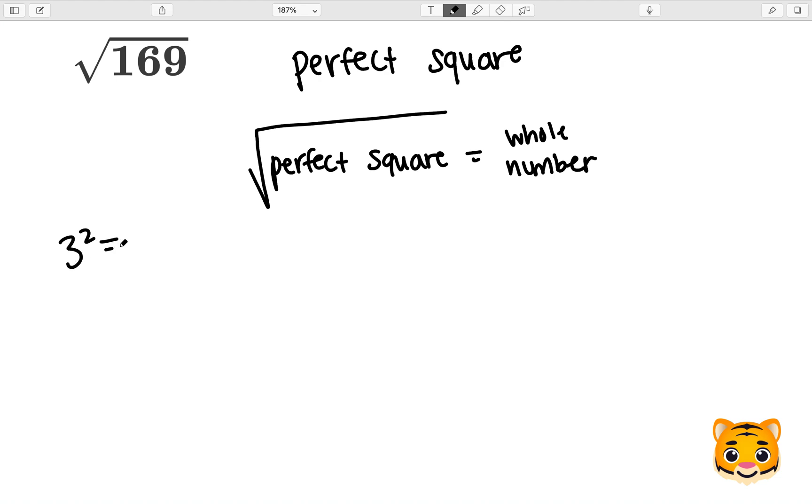Examples of perfect squares include 3 squared, which is 9 as our perfect square, 5 squared, which is 25 as our perfect square, and 10 squared, as 100, as our perfect square.